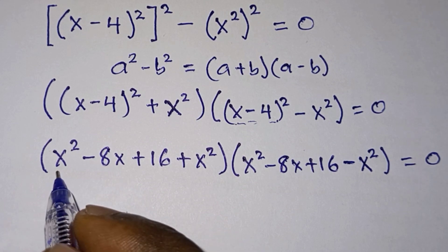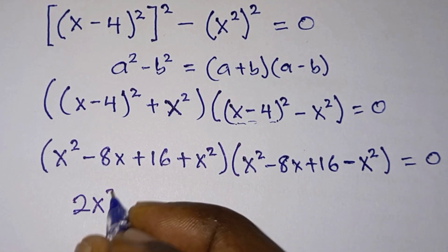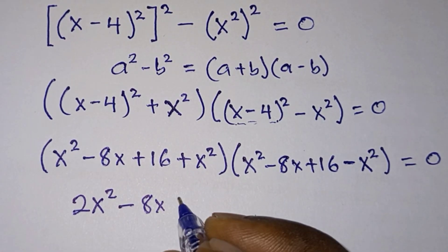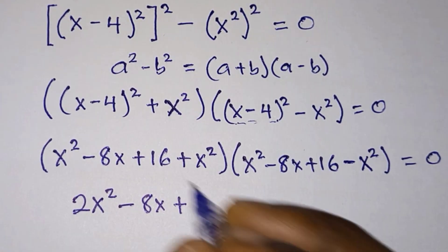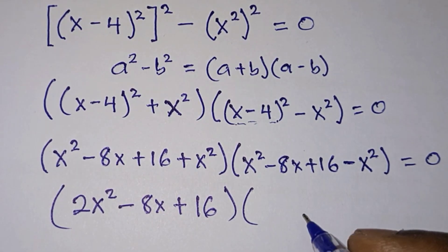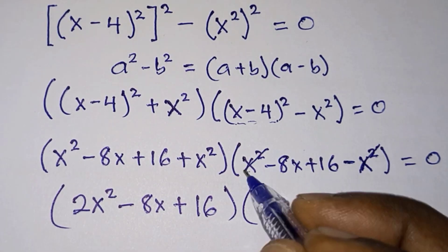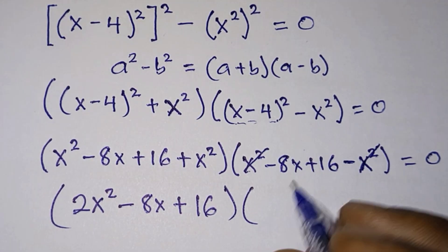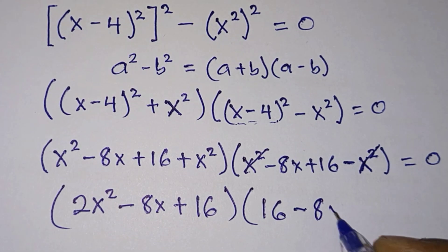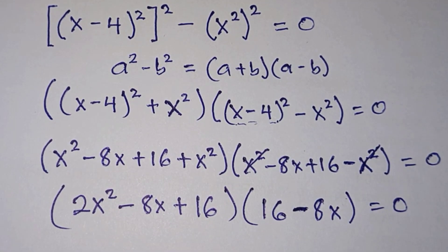Now let's simplify. x squared plus x squared gives us 2x squared, then minus 8x plus 16. For the second factor, x squared minus x squared cancels, and we are left with 16 minus 8x. And this is equal to 0.